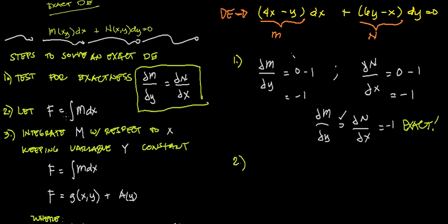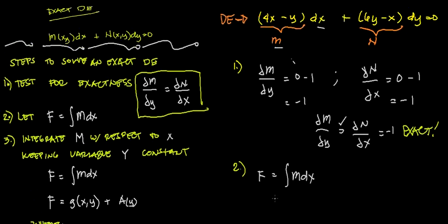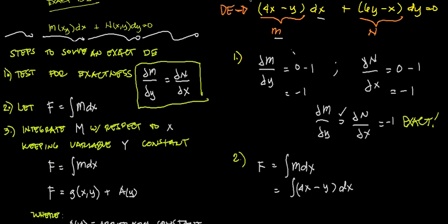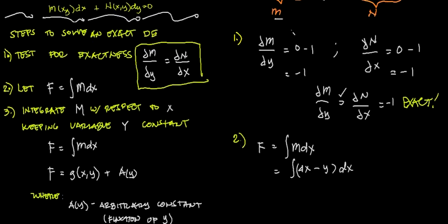Step 2: Let f equal the integral of M dx. So we have f = ∫(4x - y) dx. Then for Step 3, we need to integrate M with respect to x, keeping variable y constant.